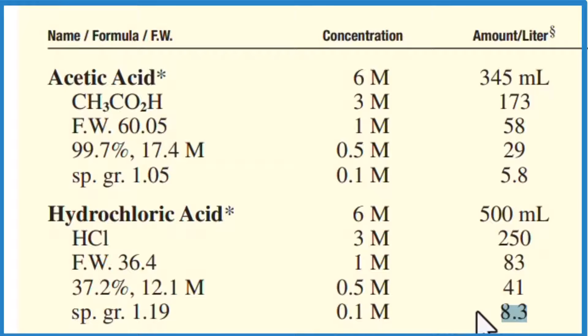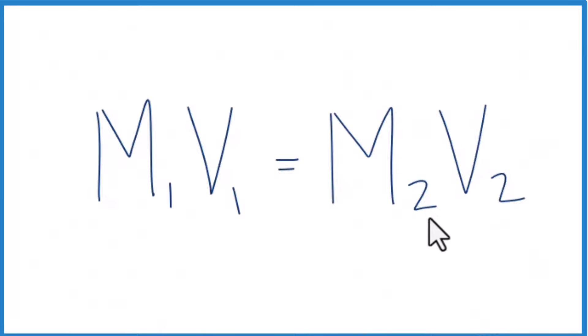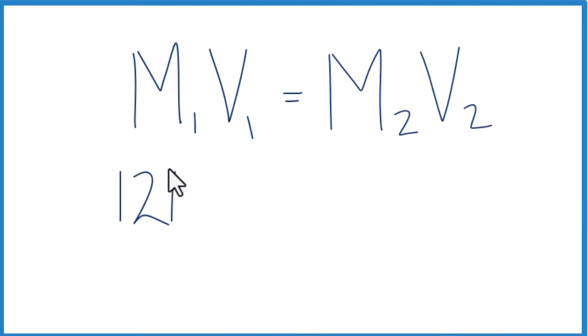There is another way you could do this as well. You could use the formula M1V1 equals M2V2, because if you look at the bottle of concentrated hydrochloric acid, it'll tell you that it's 12 molar.